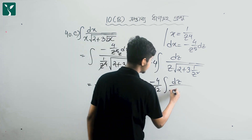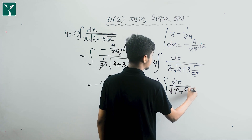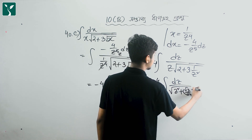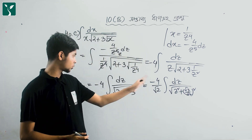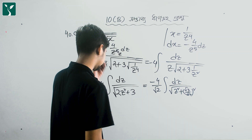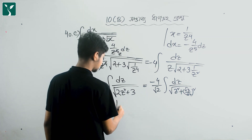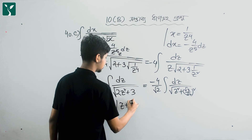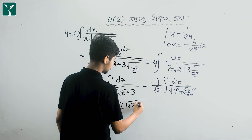So, if I say that a equals root 3 by root 2, it is z square plus 3 by 2 — that is, root 3 by root 2 whole square. Using the formula dx by root over a square plus x square equals ln x plus root over x square plus a square, we get: ln z plus root over z square plus 3 by 2.